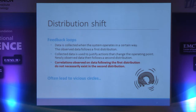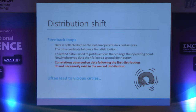So what's happening with these feedback loops? The data is collected when the system operates in a certain way, following a first distribution. Then you use this data to justify actions that change the operating point — first in the short term, then later when the various time scales come into play. The newly observed data follows a second distribution, and it's not clear that correlations observed on the first distribution exist in the second. You have this problem of the dog trying to chase its tail.